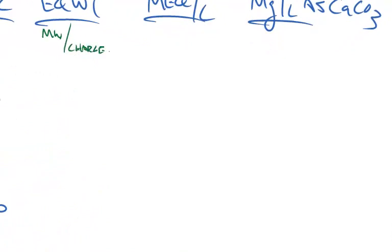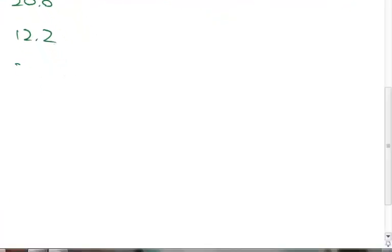For calcium we have the equivalent weight equal to 20.0, then 12.2, 23.0, 61.0—and this is where the textbook had an error—35.5 and 48.0.